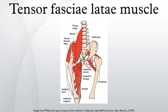It is inserted between the two layers of the iliotibial band of the fascia latae about the junction of the middle and upper thirds of the thigh. The tensor fasciae latae tautens the iliotibial band and braces the knee, especially when the opposite foot is lifted. The terminal insertion point lies on the lateral condyle of the tibia.